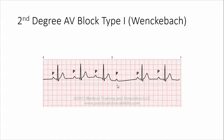Now this one does not have a QRS. Let's look into it further. The next thing we want to look at is the PRI. So we have this one, this one, here, here, and here.